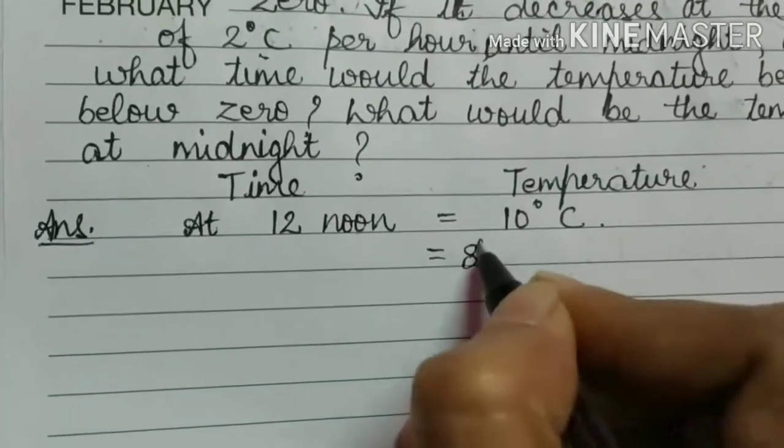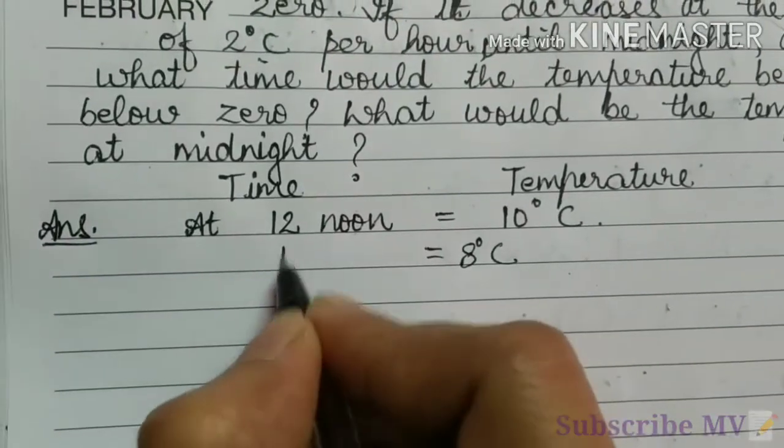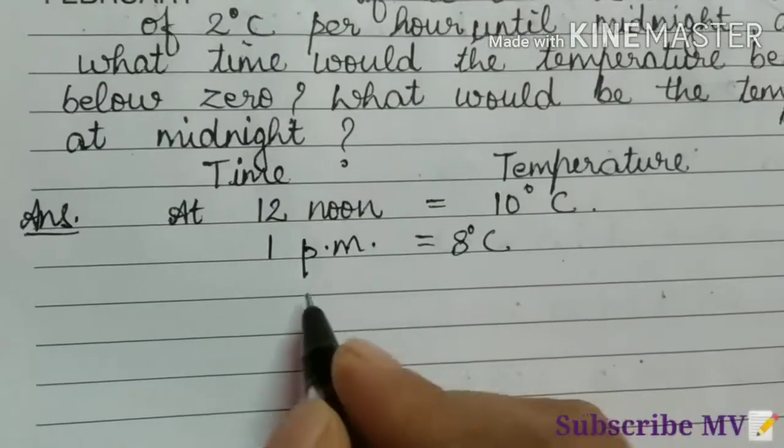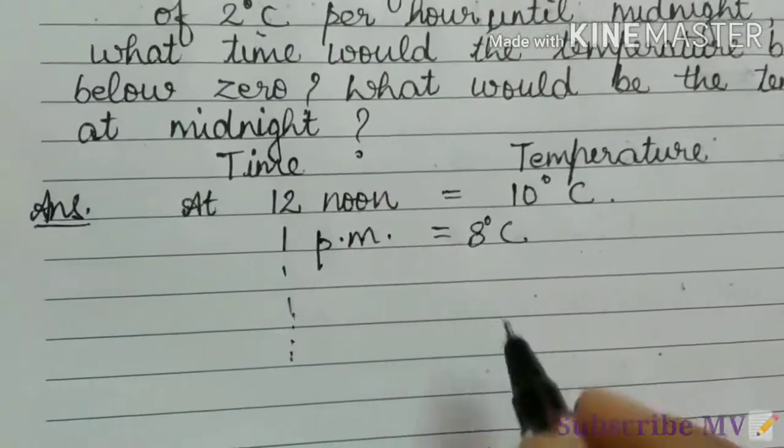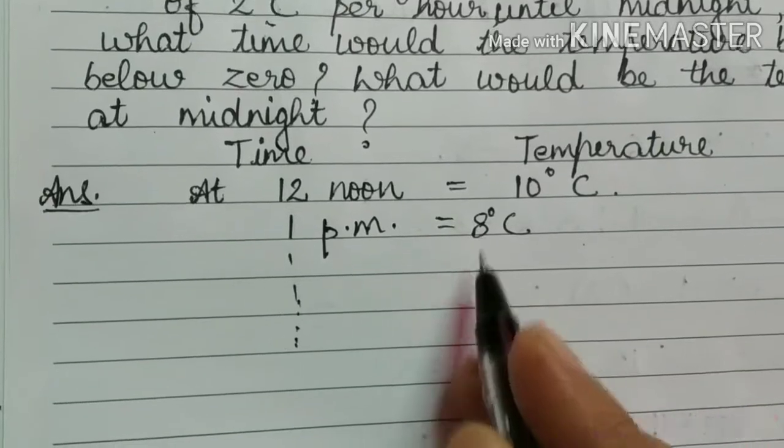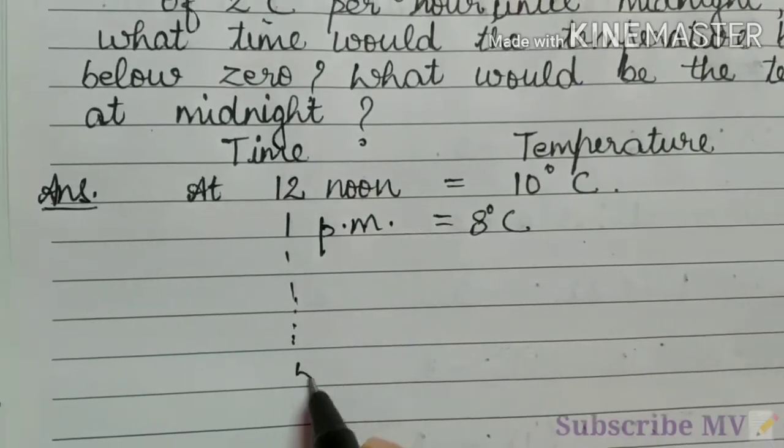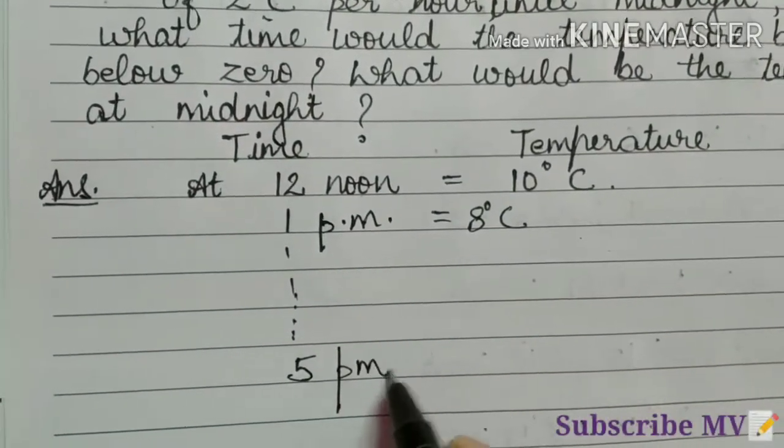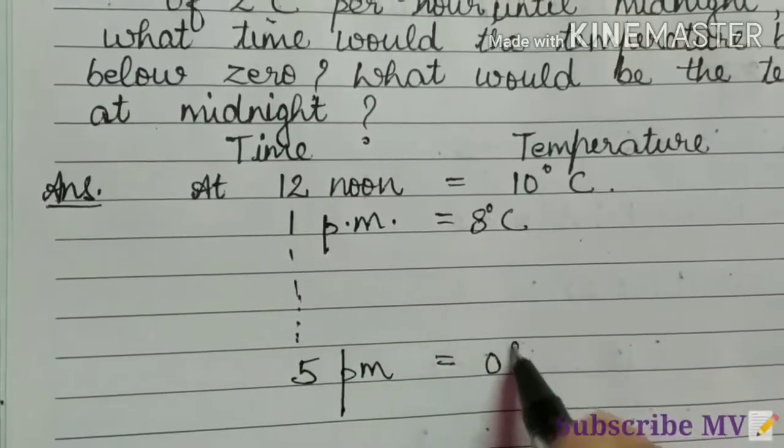So 12 noon 10 degree Celsius. Next 8 degree that is 1 p.m. So on it is decreasing by 2 degrees. So at 5 p.m. it will be 0 degree Celsius.